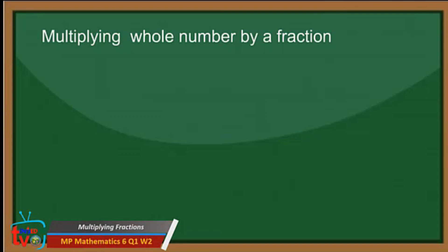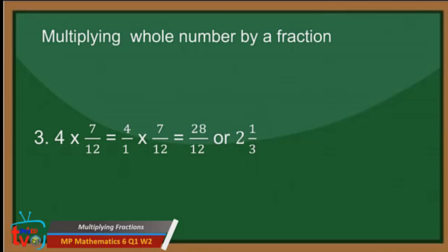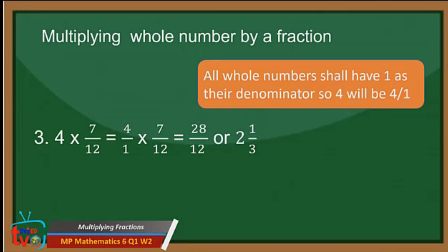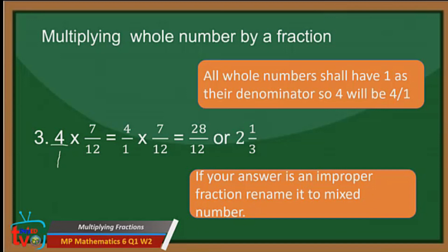How about multiplying a whole number by a fraction? Example: 4 times 7 over 12. 4 is a whole number and 7 over 12 is a fraction. To multiply a whole number by a fraction, all whole numbers shall have 1 as their denominator. So 4 will be 4 over 1. So 4 times 7 is equal to 28, and 1 times 12 is equal to 12. If your answer is an improper fraction, rename it to a mixed number by dividing 28 divided by 12. So the answer will be 2 and 1 third. So 4 times 7 over 12 is equal to 2 and 1 third.